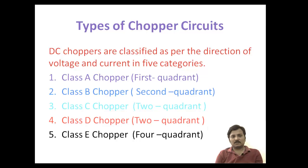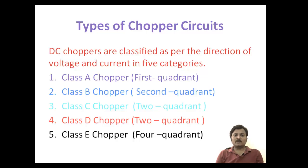Let us see the classification of chopper circuits. Generally, the DC chopper circuits are classified as per the direction of the voltage and current. Depending upon the current and voltage polarity, the choppers are classified into 5 categories: class A, class B, class C, class D, and class E.